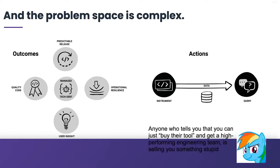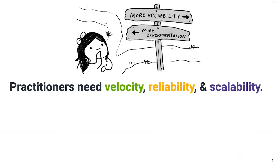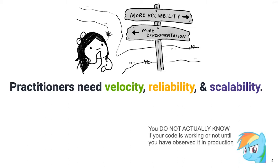Anybody who tells you that you can just buy their tool and get a high-performing engineering team is selling you something, and it won't work. A lot of people seem to feel like these three things are in tension with each other: velocity, reliability, and scalability.